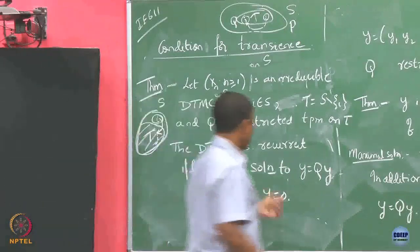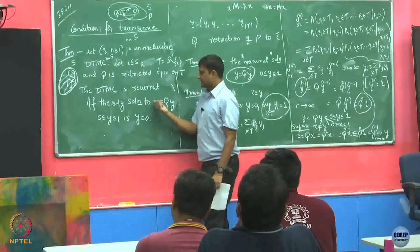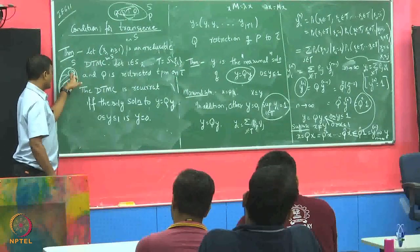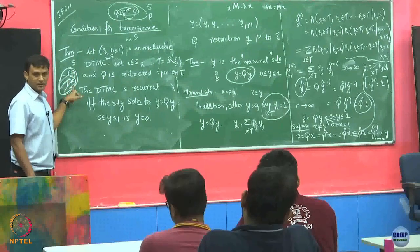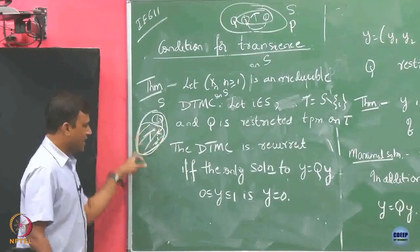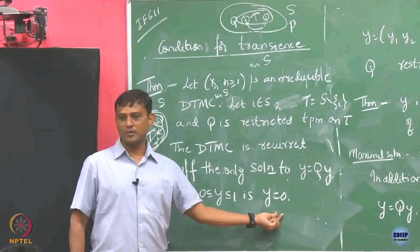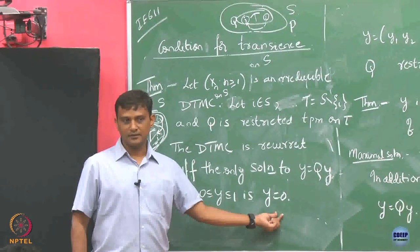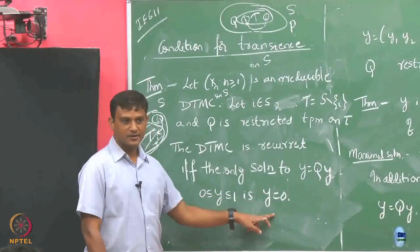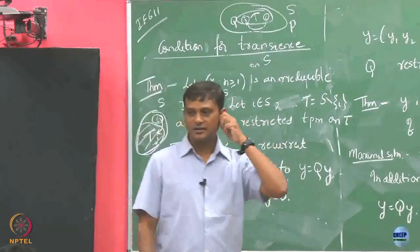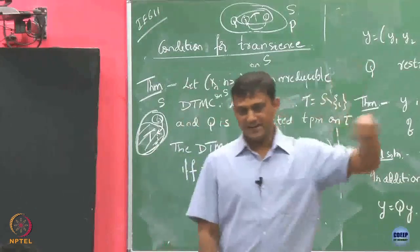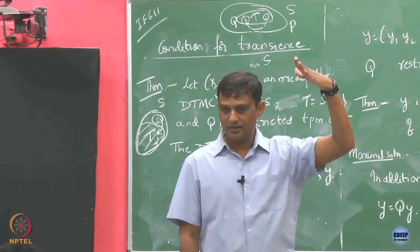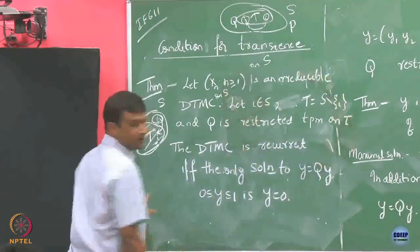What is Y equals 0 saying? If Y equals 0, then the probability that you get trapped in the same class tau is going to be 0. So there is no state in tau from which you remain forever — you always escape back. That means the chain is recurrent.